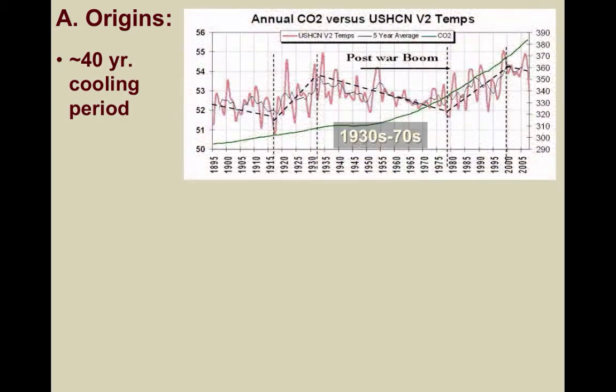Consistent with the other agricultural revolutions, the green revolution was preceded by colder global temperatures — around a 40-year cooling period from the late 1930s to the mid-1970s, likely related to solar activity and cloud formations. Colder temperatures shortened the growing season leading to lower agricultural productivity and ultimately to greater levels of famine, malnutrition, and starvation.